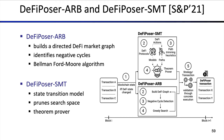Both systems are called DeFiPoser — with ARP being the Bellman-Ford algorithm version and SMT being the SMT solver version. Both depart from block I, which represents the blockchain state you're looking at. The past blockchain history defines how we got to this particular state. When the blockchain state changes — which typically happens in DeFi as people perform trades — we can call either the SMT version or the ARP version.